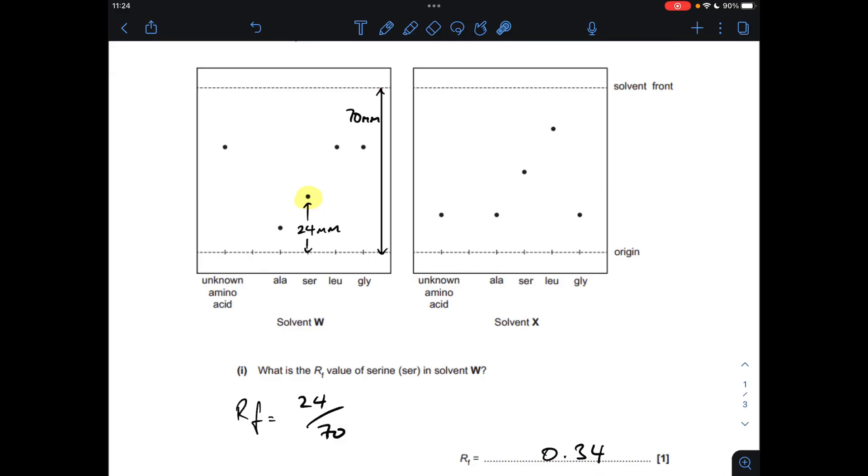So the next part of the question, I'm going to keep these on the screen because we're going to need them, is to establish what unknown amino acid is. We can see it's occurring at different locations in the different solvents.